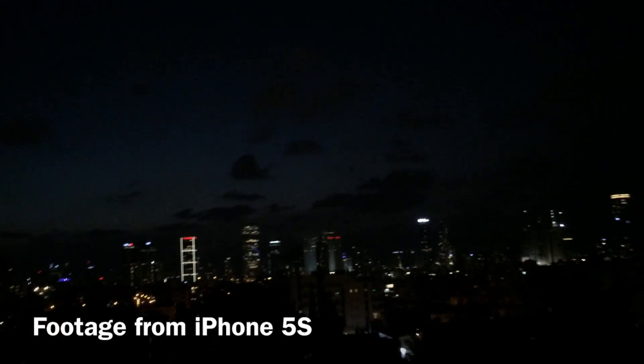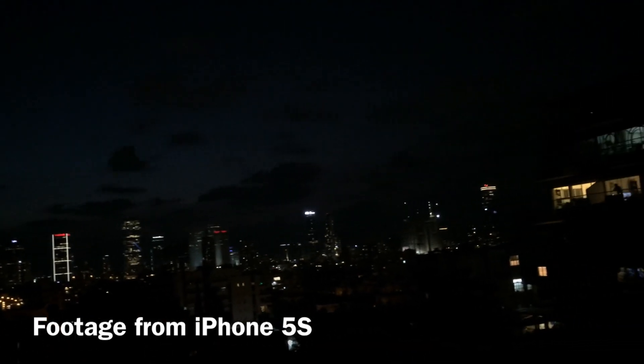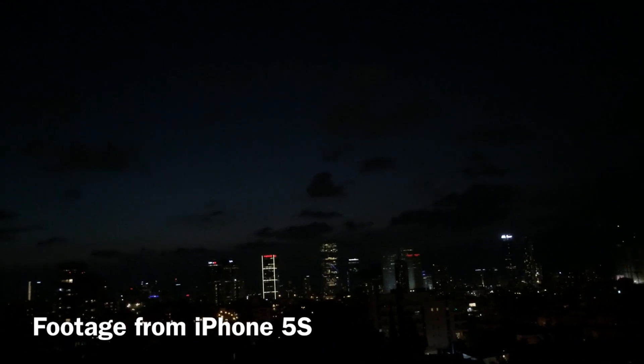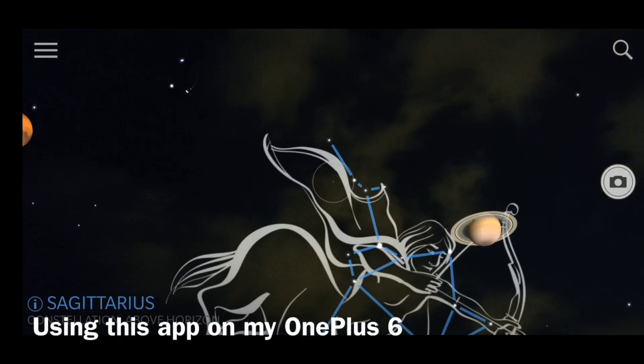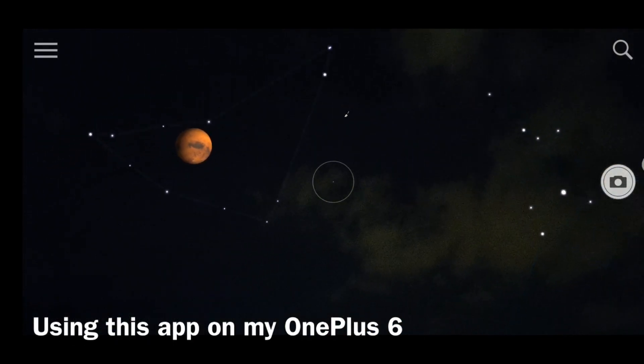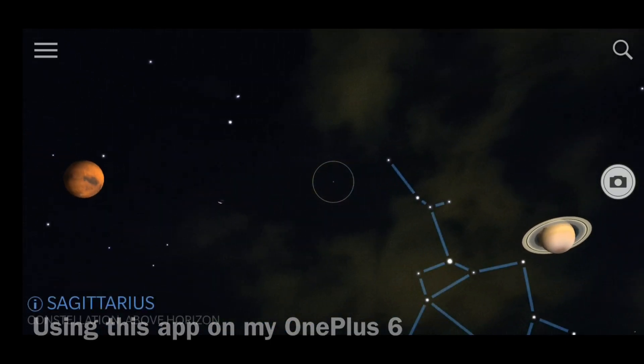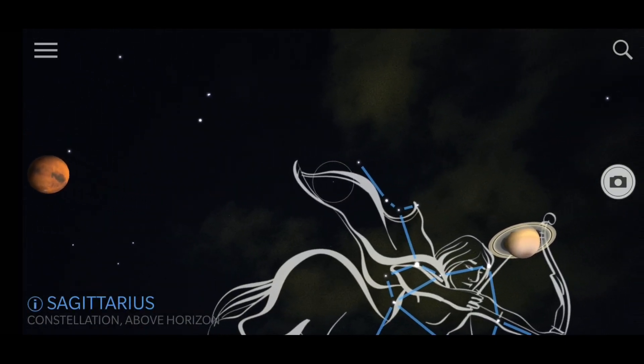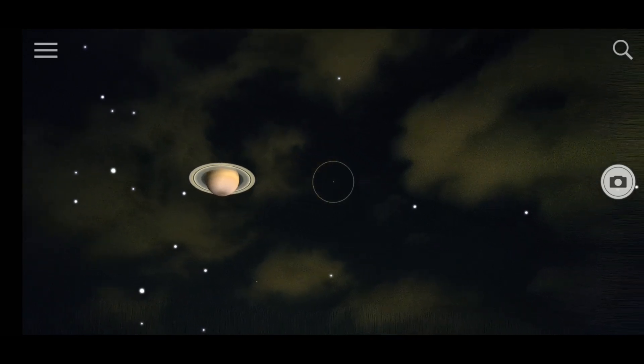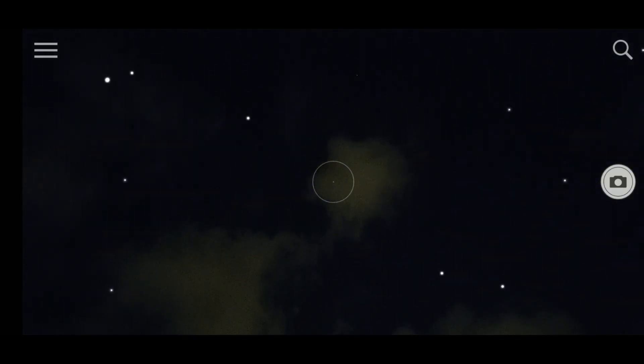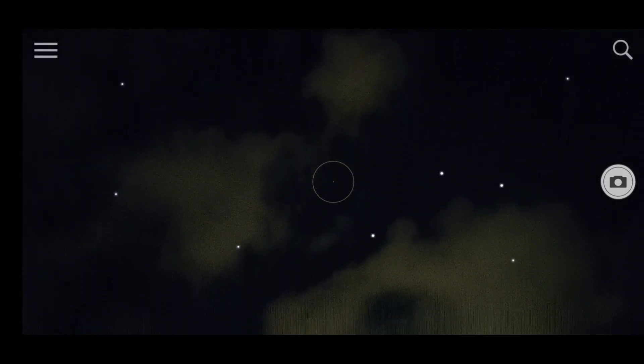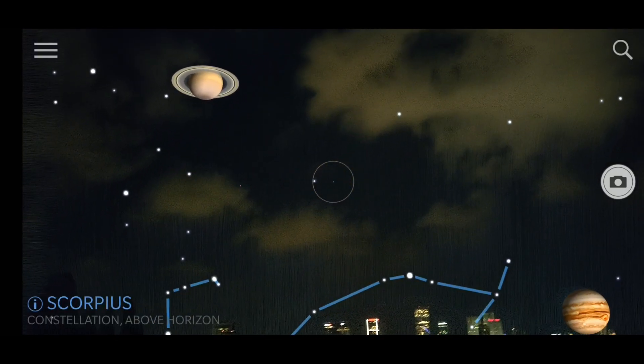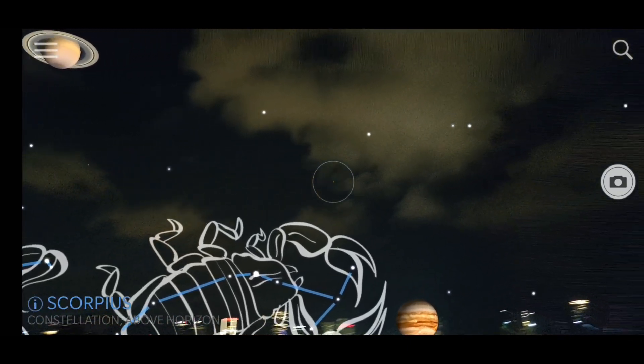Some apps like this one require a good camera apparently, because look, I'm recording the same footage with the iPhone 5s and just look how dark it is. Now here I'm using the app on my OnePlus 6. As you can see the camera is much better. It was able to bring up those clouds in the sky and overall the image appears much brighter, so I was able to see the stars in the sky and align them with the augmented ones from the app.